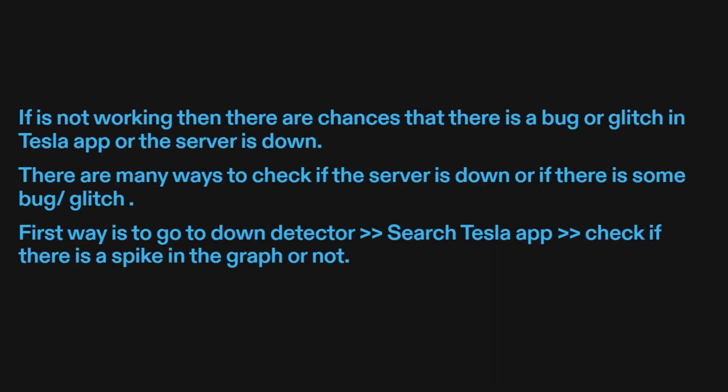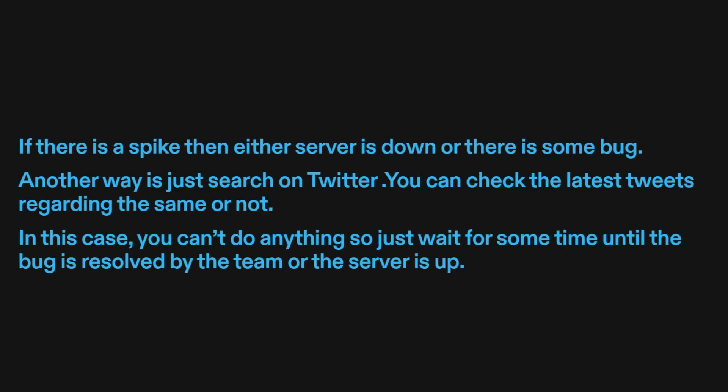Fix three: check if the server is down or not. If it's not working, there are chances that there is a bug or glitch in the Tesla app or the server is down. There are many ways to check this. First, go to Down Detector, search Tesla app, and check if there is a spike in the graph. If there is a spike, then either the server is down or there is some bug.